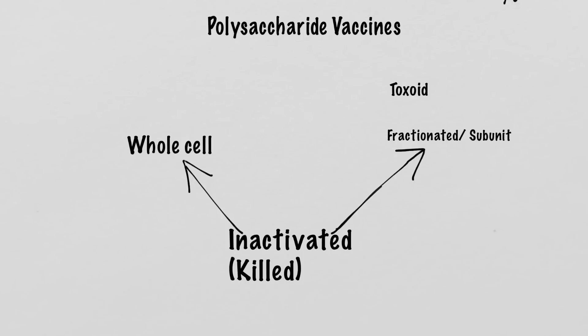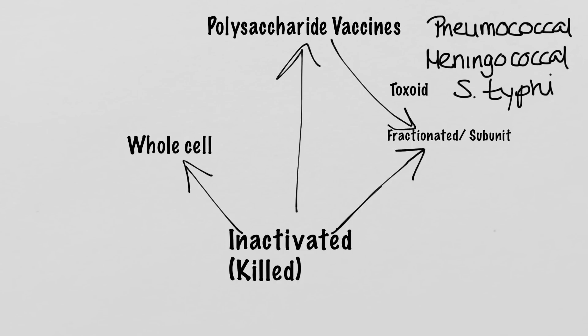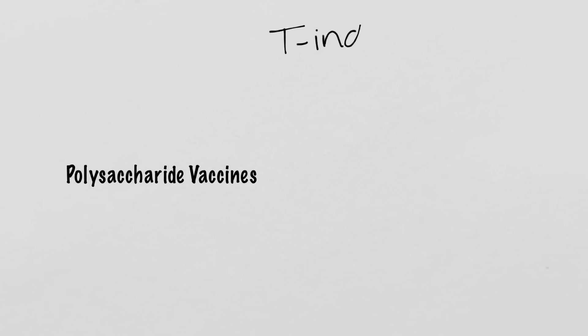The last type of vaccine we discuss are the polysaccharide vaccines, which are basically a form of a fractionated subunit vaccine. Polysaccharide vaccines are made of long sugar chains found on the surface capsule of certain bacteria. Pure polysaccharide vaccines are available for three diseases currently: pneumococcal, meningococcal, and salmonella typhi. Now we have a little bit of a conundrum. Remember that memory B cells can only be made with T cell help — but do T cells see polysaccharides? Nope. So when we're talking about a polysaccharide vaccine, we're typically talking about a T-independent vaccine. So how does that work if vaccines are meant to provide memory?